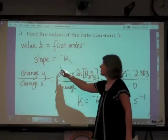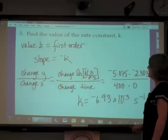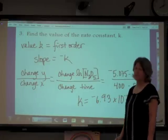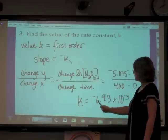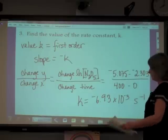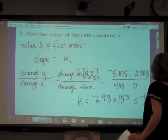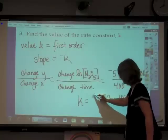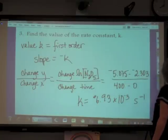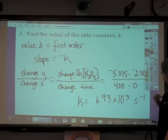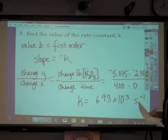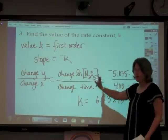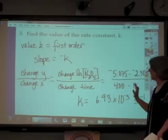Wait — if slope is equal to the opposite of K, then did I make a mistake? Yes, I made a mistake. It is not going to be negative 6.93 × 10⁻³ — it is going to be the opposite of that, which is a positive 6.93 × 10⁻³ seconds⁻¹.